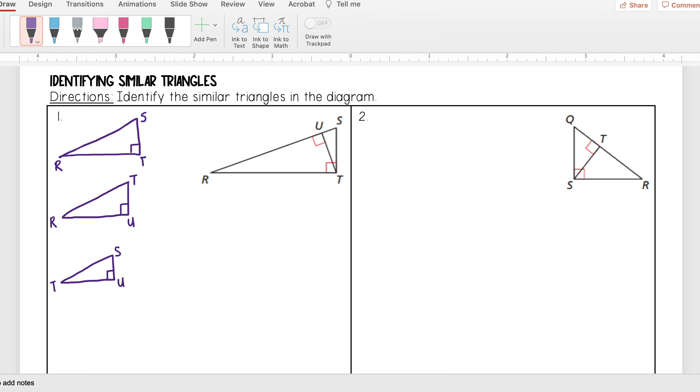Redrawing it like this really helps us to write our similarity statement because I can just go in order of the letters from here. If I start with my first triangle, let's go with RST, I'm going to go in that same order for the other two triangles. So that means RTU and then TSU.